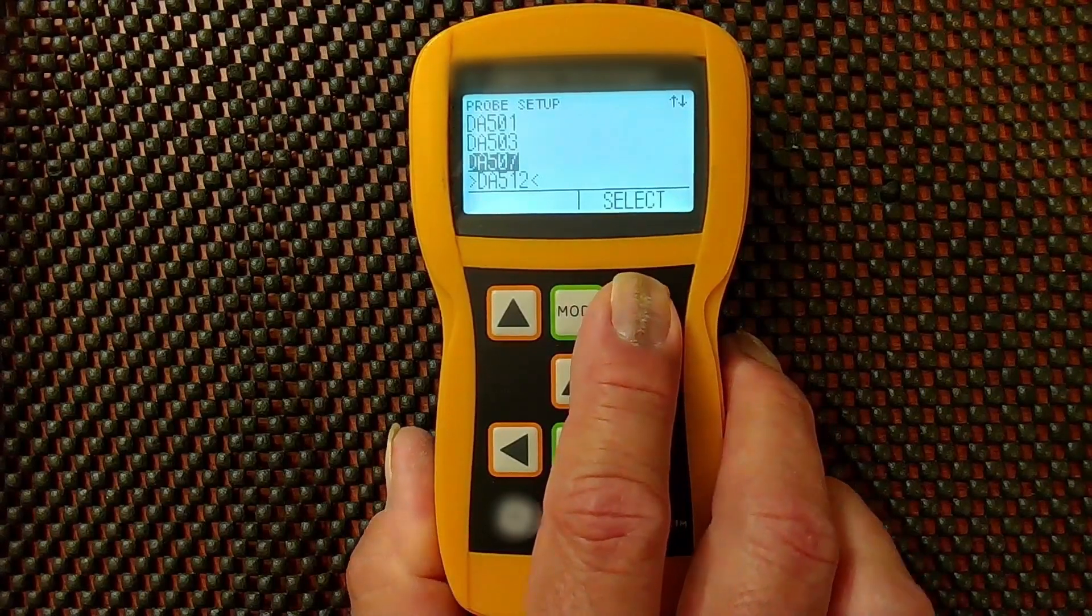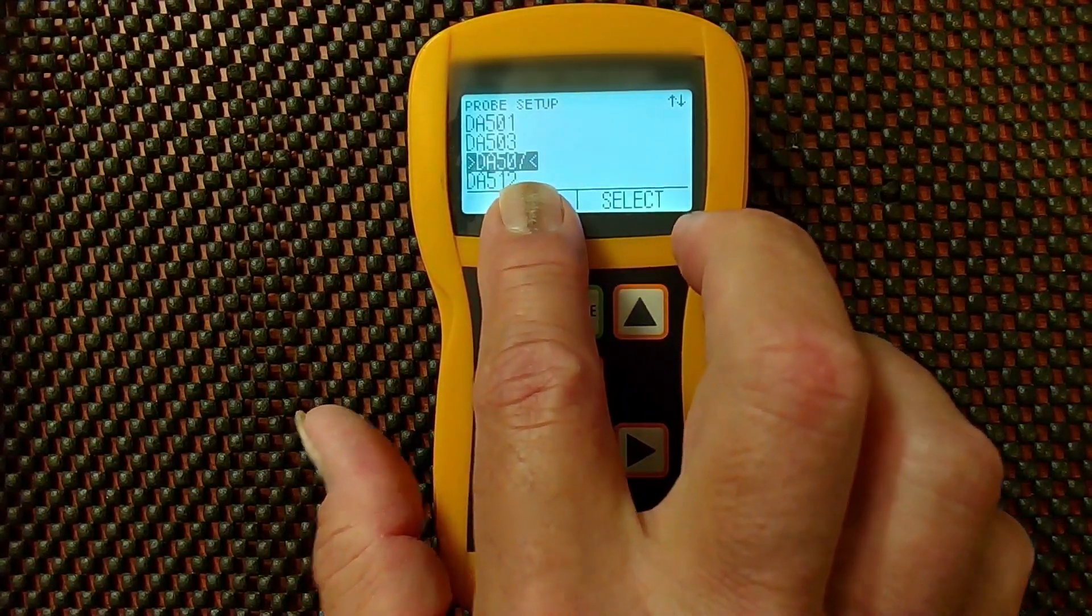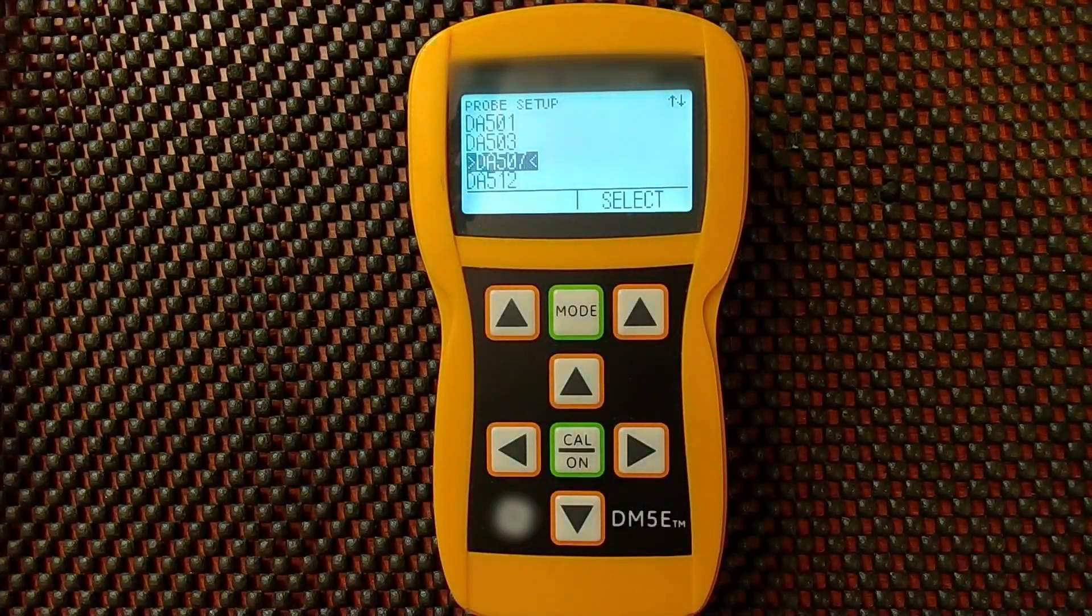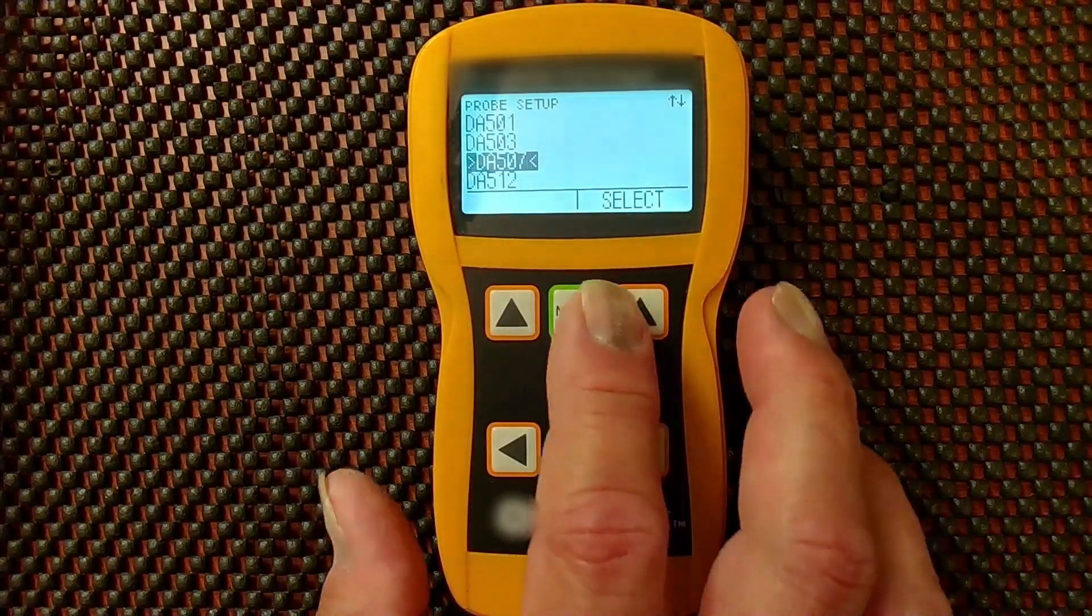If I press select, you notice now the greater than, less than symbols are on either side of the selected probe. So that will remain the selected probe now.